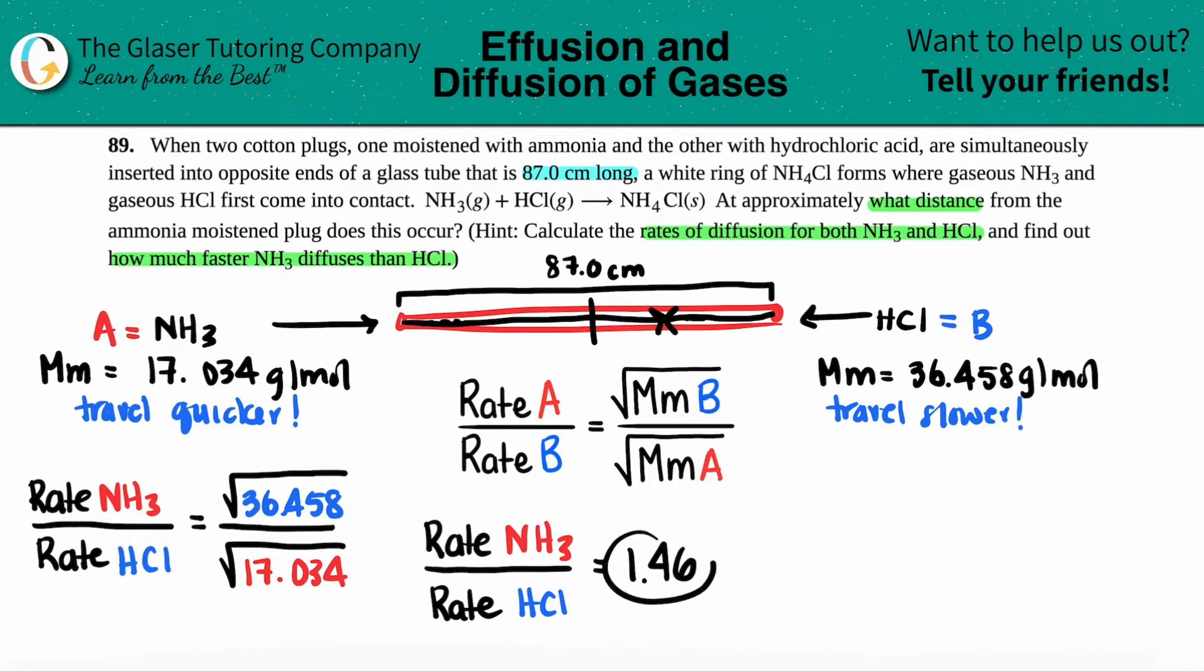If I want to make this into a fraction, I could just put this over 1. You see how if HCl is going at a speed of 1, NH3 will be going 1.46 times faster. That's all that these ratios mean. NH3 travels 1.46 times faster.